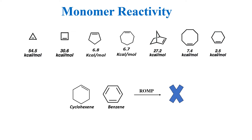The most common monomers used in metathesis polymerization are highly strained cyclic olefins such as cyclobutene, cyclopentene, cyclooctene, cyclopentadiene, norbornene and their derivatives. The reactivity of cycloalkenes toward ring opening metathesis polymerization decreases with an increase in ring size. Olefins such as cyclohexene or benzene have little or no ring strain and therefore cannot be polymerized.